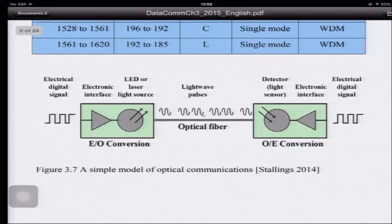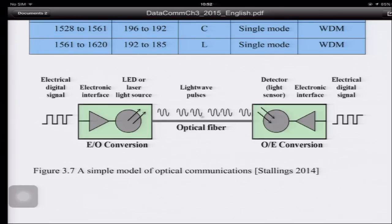The simple model of optical communications: an electrical digital signal comes in through an electronics interface to an LED or laser light source. After electrical-to-optical conversion, a light wave pulse is sent through the optical fiber. At the receiver, a light detector converts the optical signal back to electrical signal — optical-to-electrical conversion — and outputs the electrical digital signal.